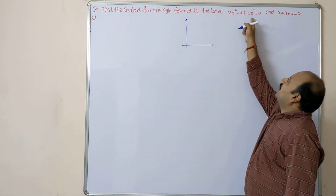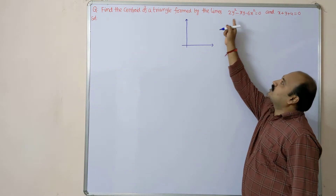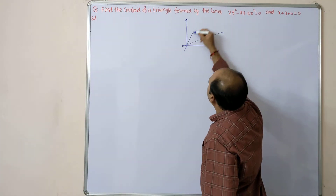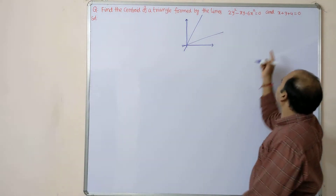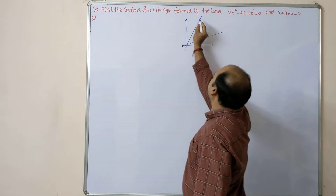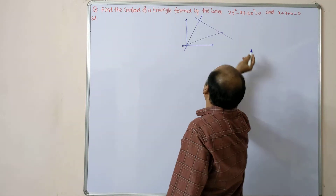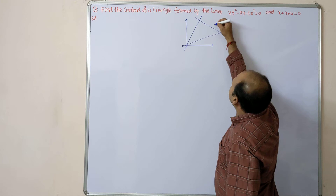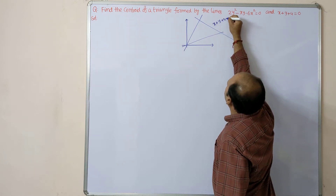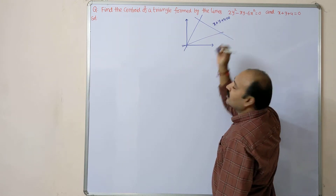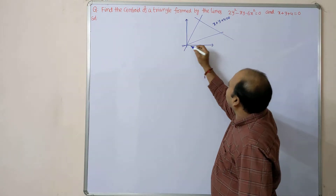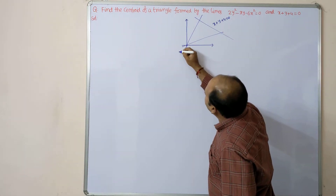The given pair of lines is in the form ax² + hxy + by², meaning the two lines pass through the origin. And the line x + y + 4 = 0 is not passing through the origin. The point of intersection of the two lines from the pair is obviously the origin.